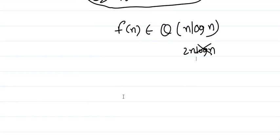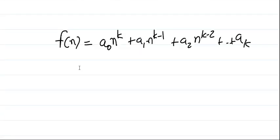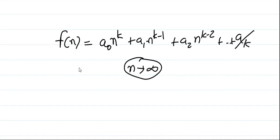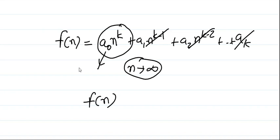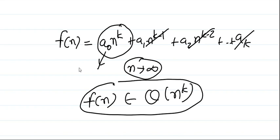Let's generalize. If f(n) = a₀nᵏ + a₁nᵏ⁻¹ + a₂nᵏ⁻² + ... + aₖ, then for very large values of n, we can ignore lower-order terms. The dominating term is a₀nᵏ, and we can also ignore the constant multiplier. Therefore this polynomial function belongs to theta of nᵏ. This is an important result: a polynomial of degree k belongs to theta of nᵏ.